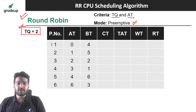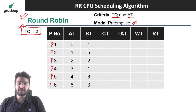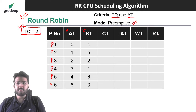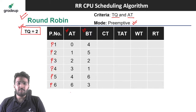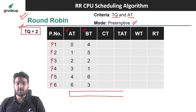Suppose we have 6 processes: P1, P2, P3, P4, P5, and P6. Arrival time and burst time are given. We need to find the completion time, turnaround time, waiting time, and response time for all these processes. We are going to maintain one queue and prepare a Gantt chart to schedule the processes.